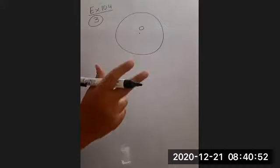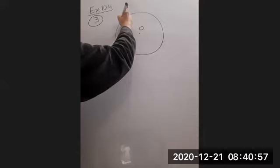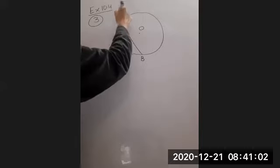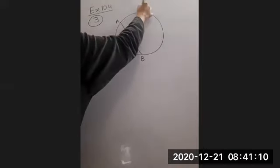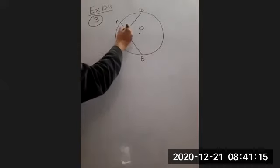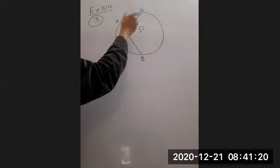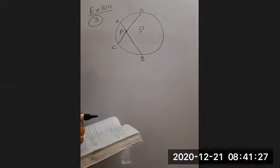We are given two equal chords intersecting within the circle. So let us say this one. Let us say AB and CD be the two chords which are equal. And let us say they are intersecting within the circle, let us say at point P, right? So let AB and CD be two equal chords intersecting at P.